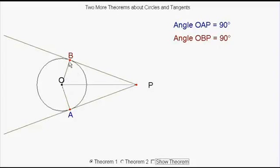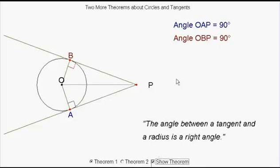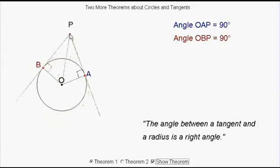But the angle between the radius and the tangent is always the same and it's always a right angle. So that's the first of our rules.